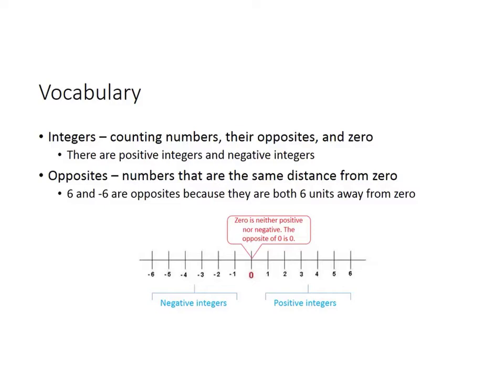An integer is any counting number, their opposites, and zero. You need to keep in mind that there are both positive integers and negative integers. If you look down at our number line, you can see that on the right side of zero are the positive integers, and on the left side of zero are the negative integers.